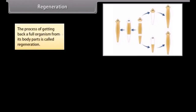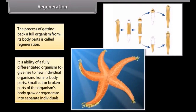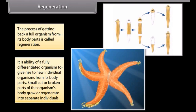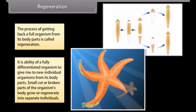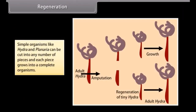Regeneration. The process of getting back a full organism from its body parts is called regeneration. It is the ability of a fully differentiated organism to give rise to new individual organisms from its body parts. Small cut or broken parts of the organism's body grow or regenerate into separate individuals. Simple organisms like hydra and planaria can be cut into any number of pieces, and each piece grows into a complete organism.